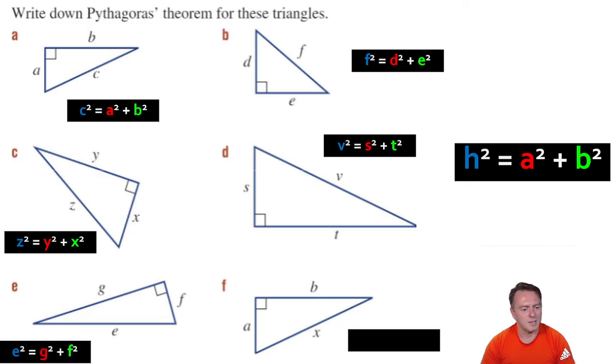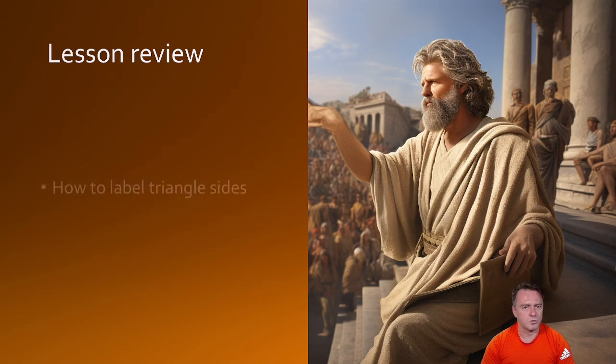e, you should have seen e squared is equal to g squared plus f squared. And then the last one, x squared is equal to a squared plus b squared.